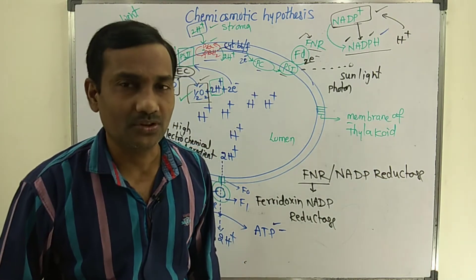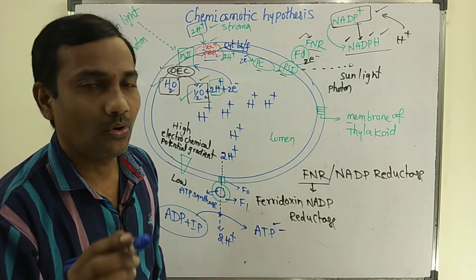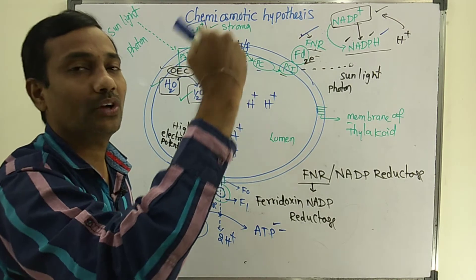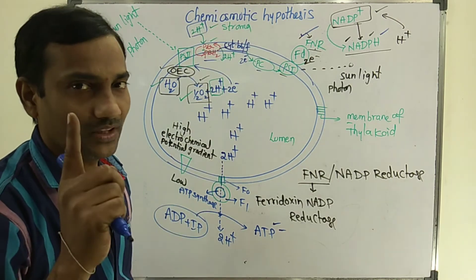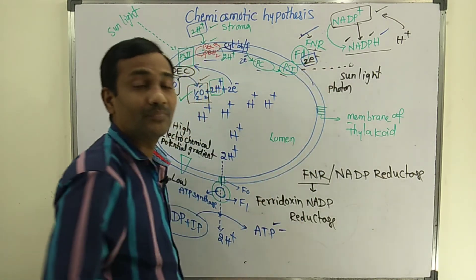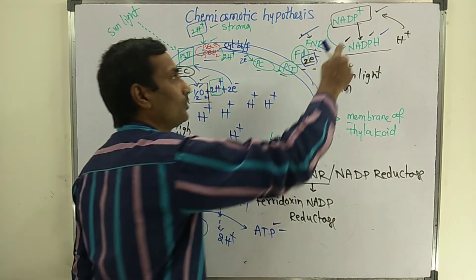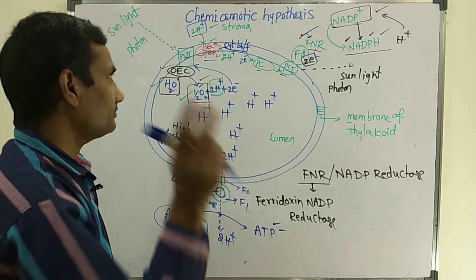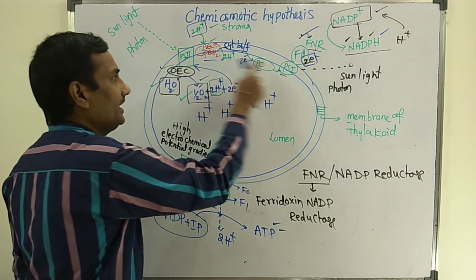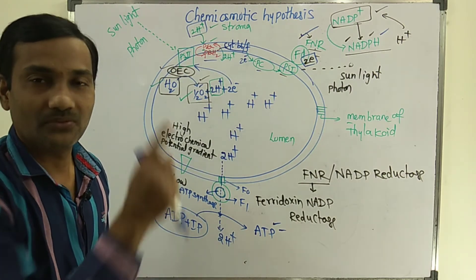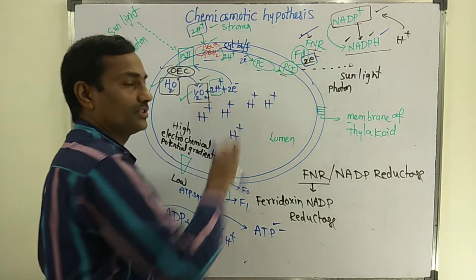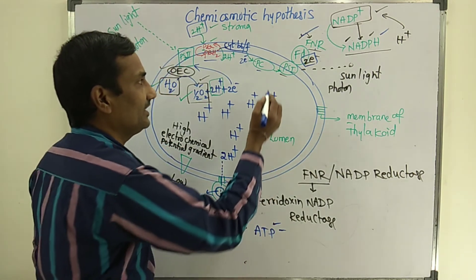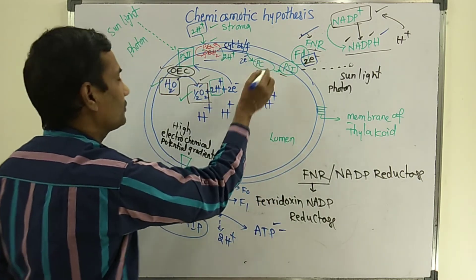In exams, you can expect questions like: What is the location of FNR enzyme? — FNR enzyme is located towards the stroma. How many electrons are needed to reduce NADP+ to NADPH? — Two electrons. How many photosystems are needed for the Z-scheme pathway? — Two photosystems. What is the mobile electron carrier in the Z-scheme pathway? — That is plastocyanin.